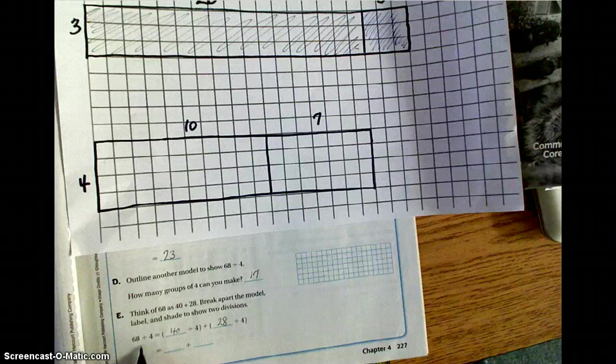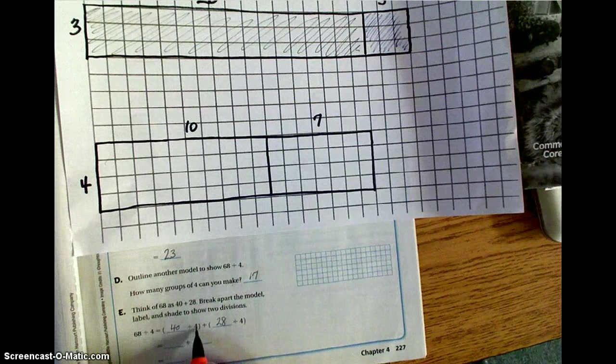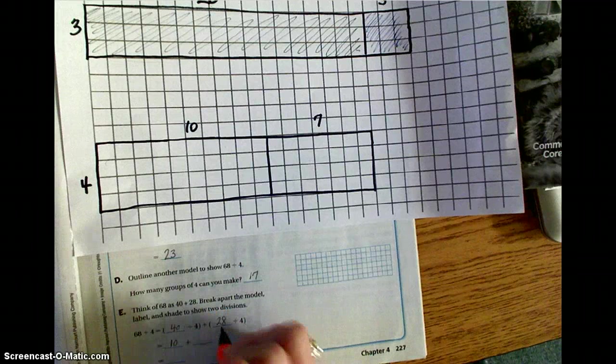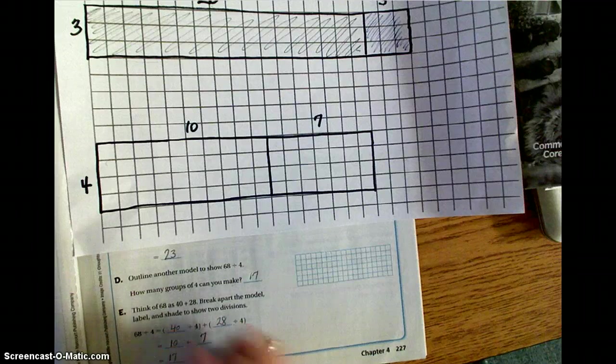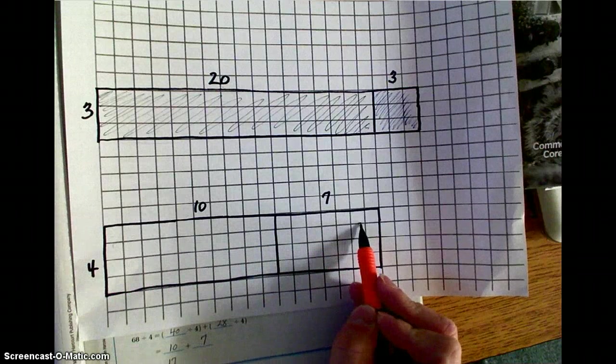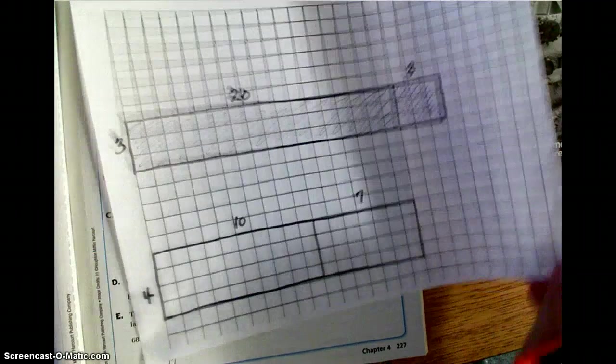Essentially, I broke it up into two smaller parts. And that's going to equal, mental math, 40 divided by 4 is 10. 28 divided by 4 is 7. So 10 plus 7 is 17. It's represented right here across the top of your model. 10 and 7. All right, go ahead and flip to the next page. You're going to turn to page 228.